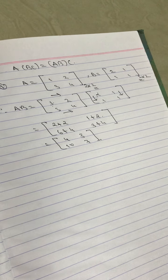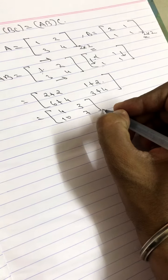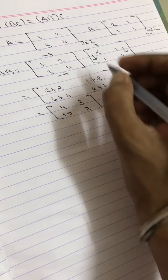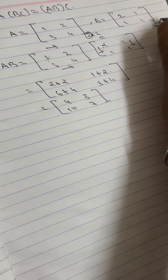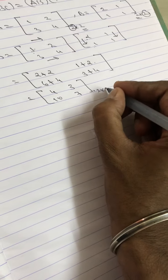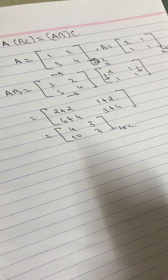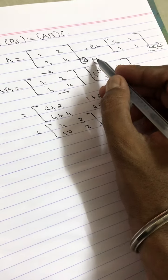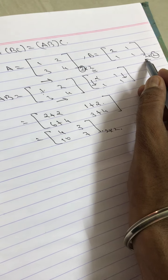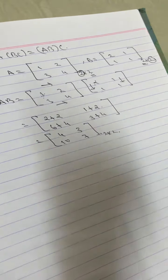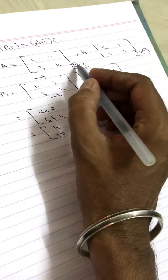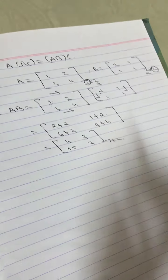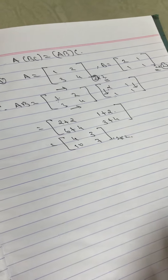We have obtained AB. Always remember — the order of the result: to get AB, columns of A and rows of B must be equal, but the result will be in the order of rows of A and columns of B.